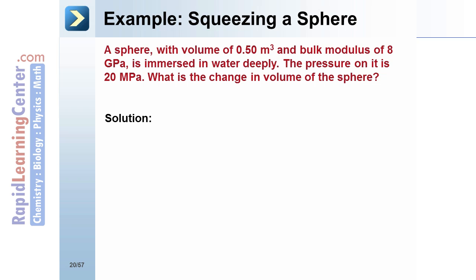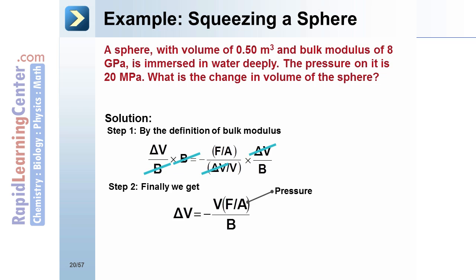A sphere with a volume of 0.5 cubic meters and a bulk modulus of 8 gigapascals is immersed in water deeply. The pressure from this water is 20 megapascals. What's the change in volume of the sphere? First, apply the definition of bulk modulus. Next, we can rearrange or solve for our change in volume, delta V. Substituting the values given in the problem, we get a change in volume of negative 1.25 times 10 to the negative third cubic meters.